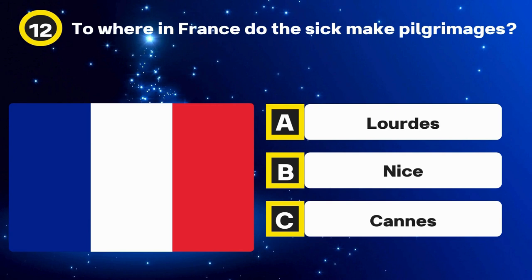Question 37. Giacomo Agostini: 122 Grand Prix wins, 15 world titles — what sport? Options: Motorcycle racing, Formula One racing, Cycling. The answer: Motorcycle racing.